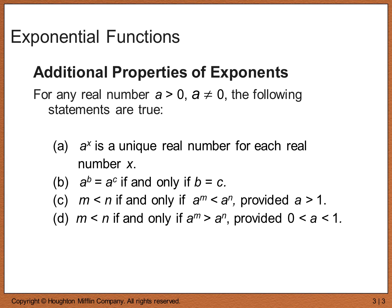A few more properties unique to exponents: as long as your base a is greater than 0, a to the x is going to be a unique real number for each real number x. If a to the b equals a to the c, then b and c — the two exponents — have to also be equal. That's a property we're going to use in a couple of examples.